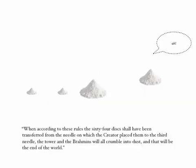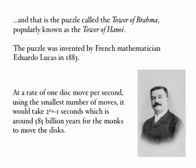According to the rules, if we follow this for all 64 discs, and we transfer them from the leftmost needle to the rightmost needle, then all the monks, the temple, the tower, and the world will crumble into dust. And that's the Tower of Brahma, or the puzzle known as the Tower of Hanoi. It was invented in 1883 by a French mathematician, Eduardo Lucas.